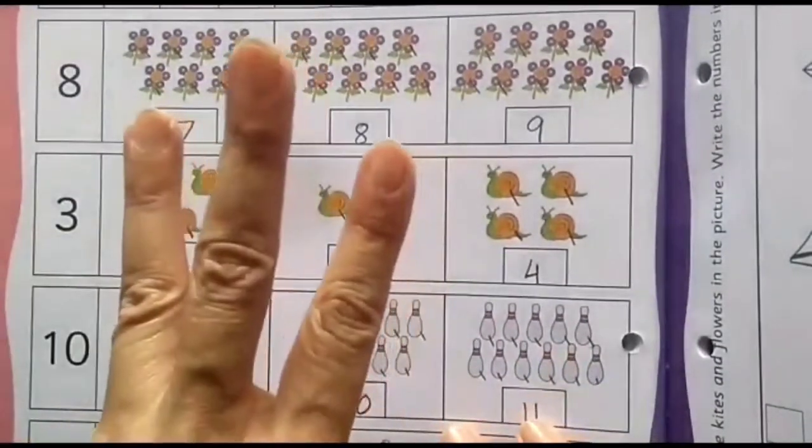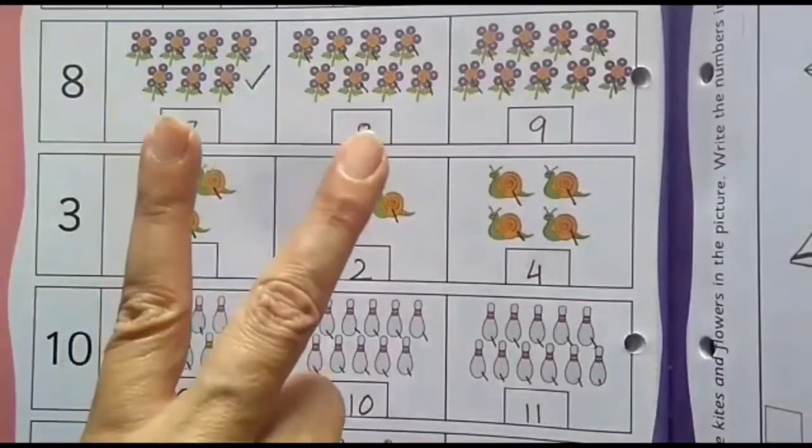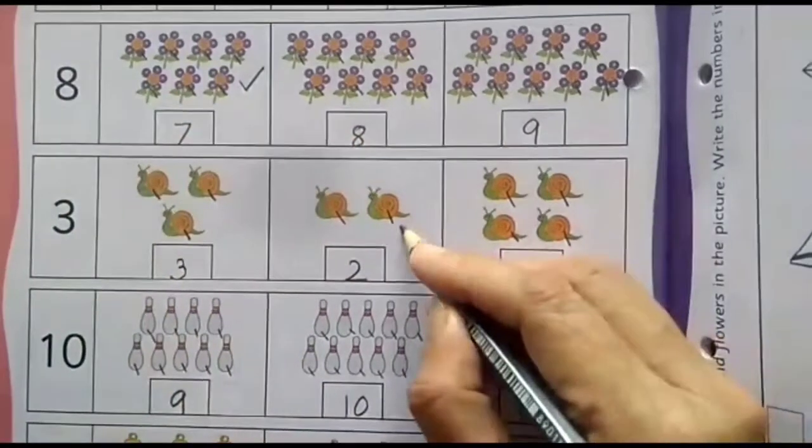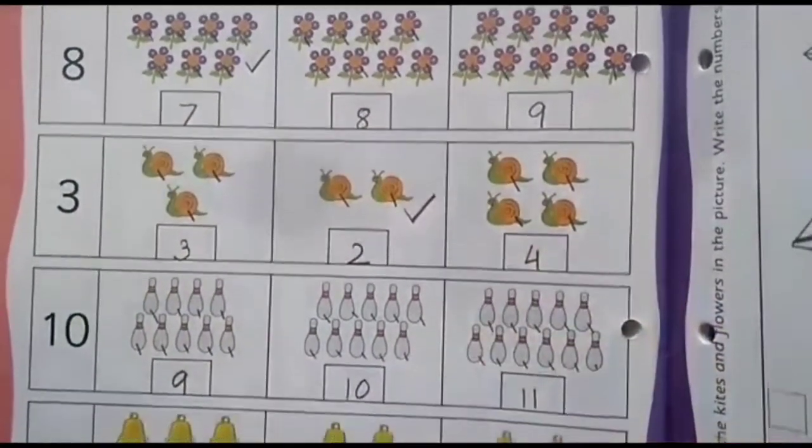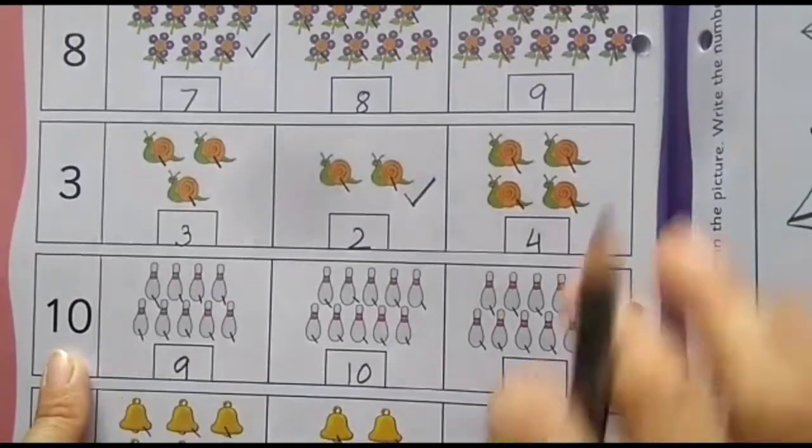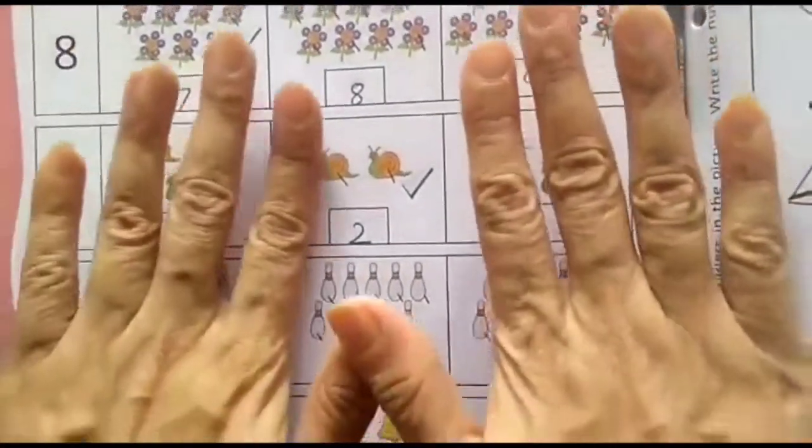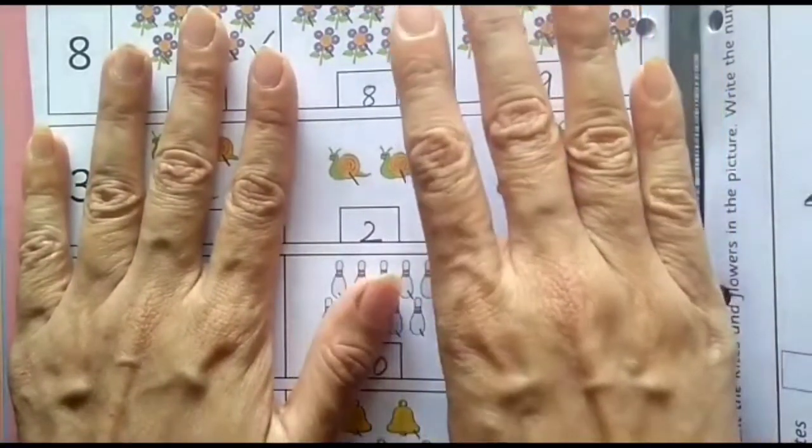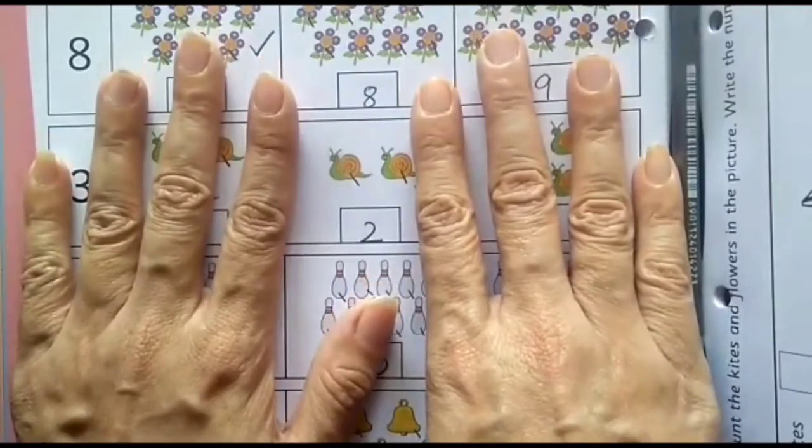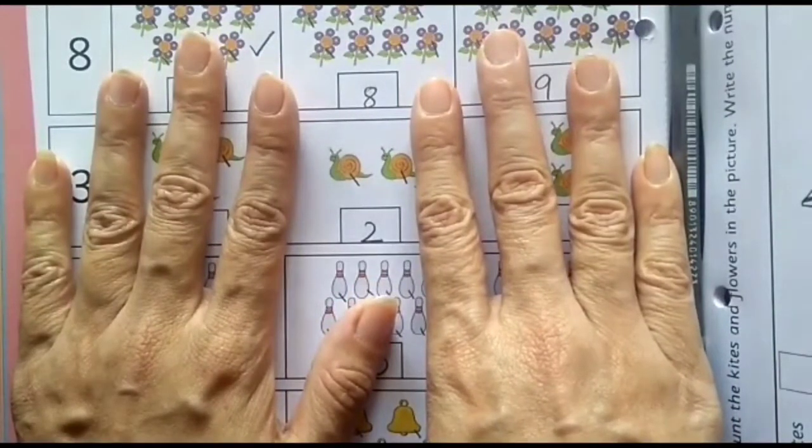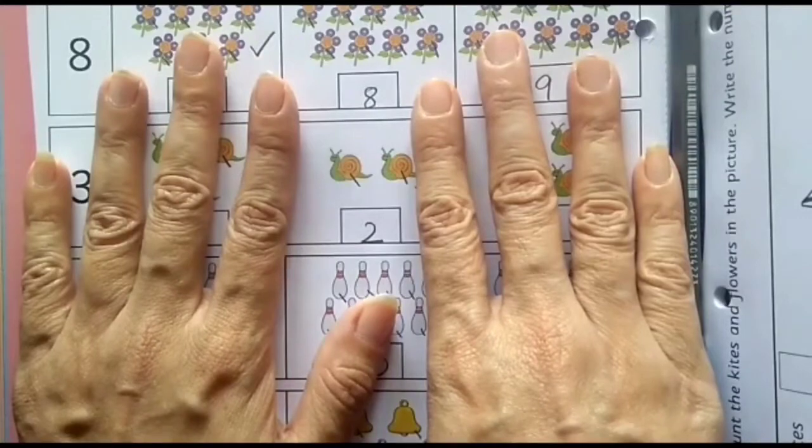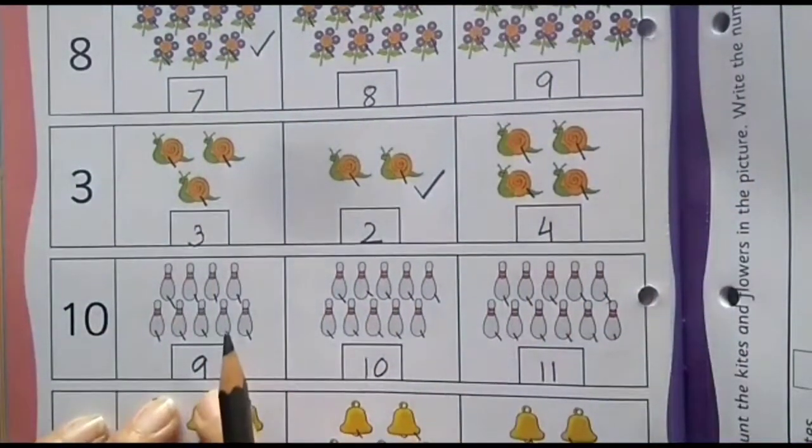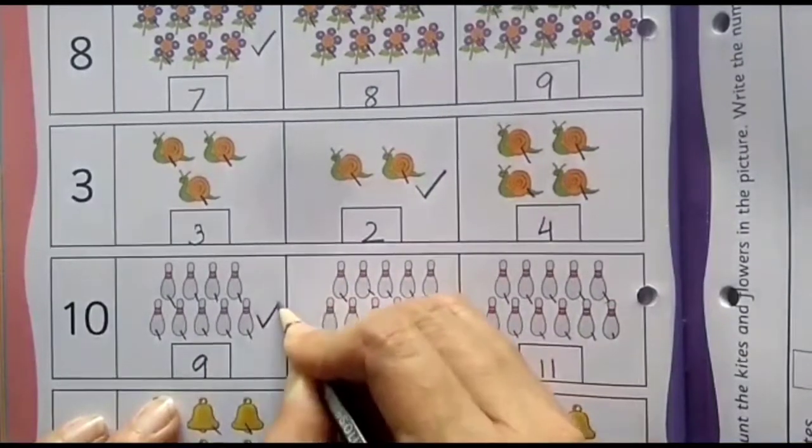Number 3. 3 fingers. 1 less means 1 will go. So, then which number will be ticked? You have understood. So, put a tick mark here in number 2. Which number is this? Number 10. So, let's show 10 fingers here. From 10 fingers, 1 less. So, 1 will go down. Then, how many fingers are remaining? 1, 2, 3, 4, 5, 6, 7, 8, and 9. So, here you are going to put a tick mark. Number 9.